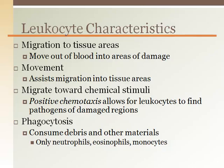Leukocytes can move out of the blood and into the tissues, to areas of damage or where an antigen, invader, or pathogen is located. This process is called migration. Some leukocytes crawl and squeeze between capillary endothelial cells. Some leukocytes are phagocytic, meaning they can consume or ingest material such as damaged tissue, pathogens, or antigens, as part of their role in protecting us and facilitating repair.